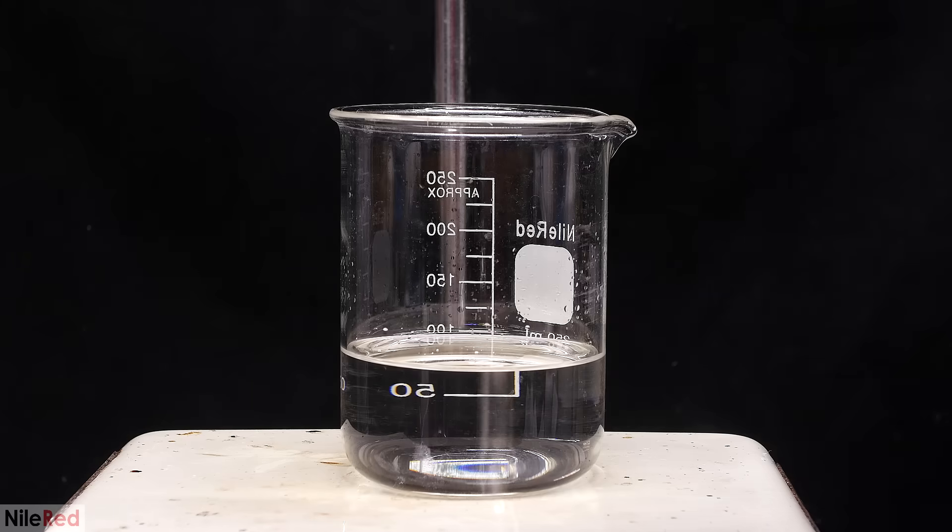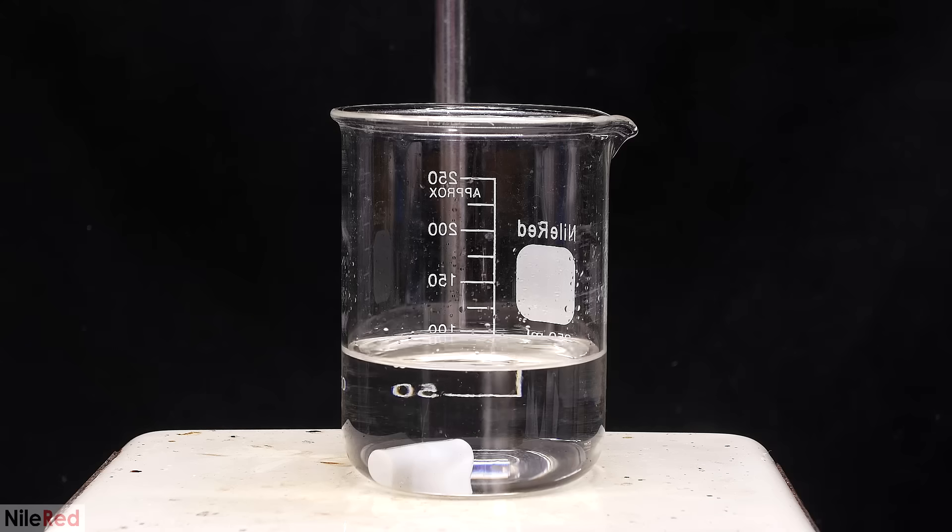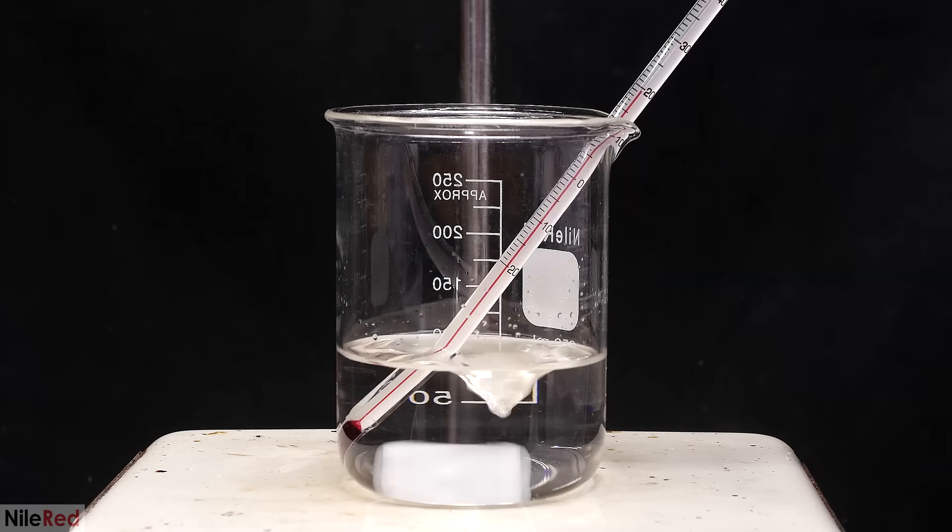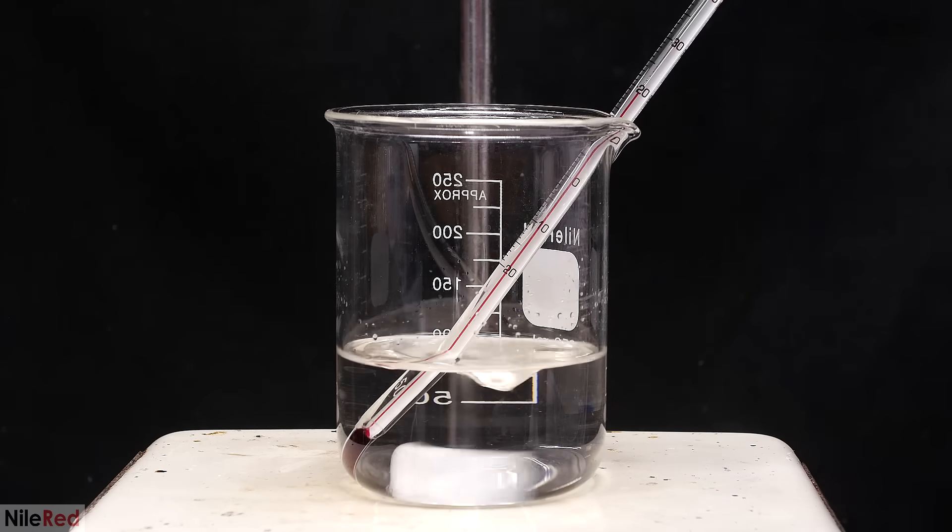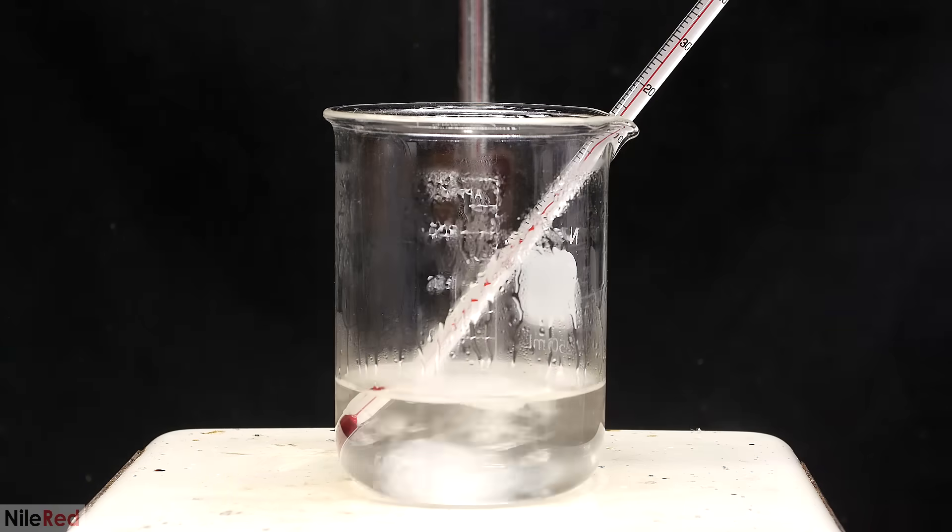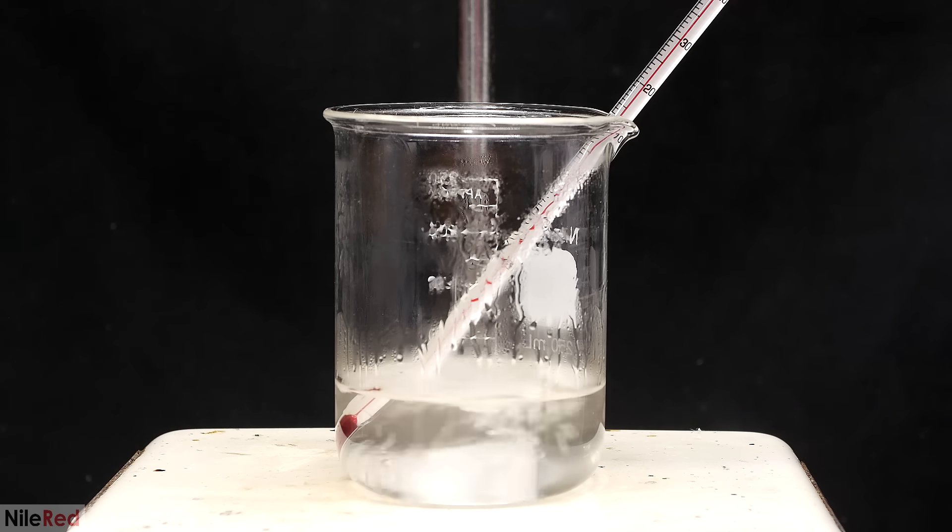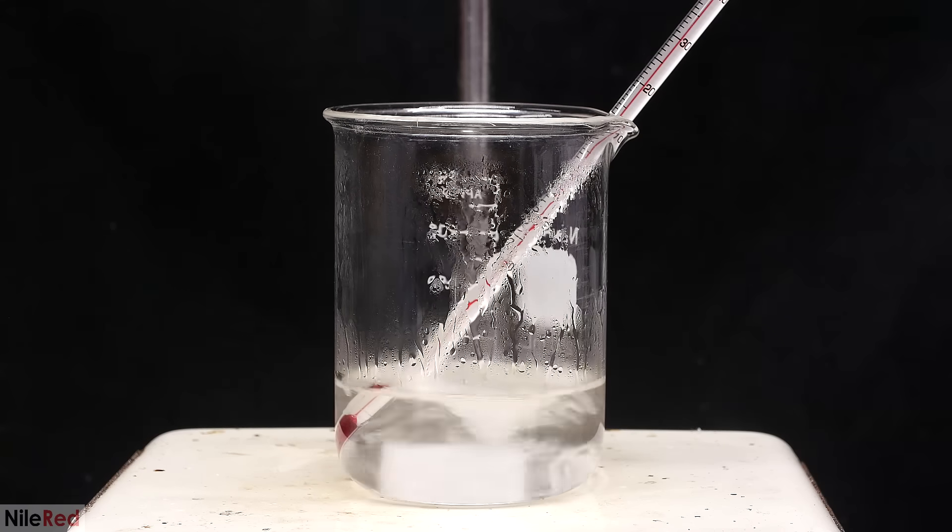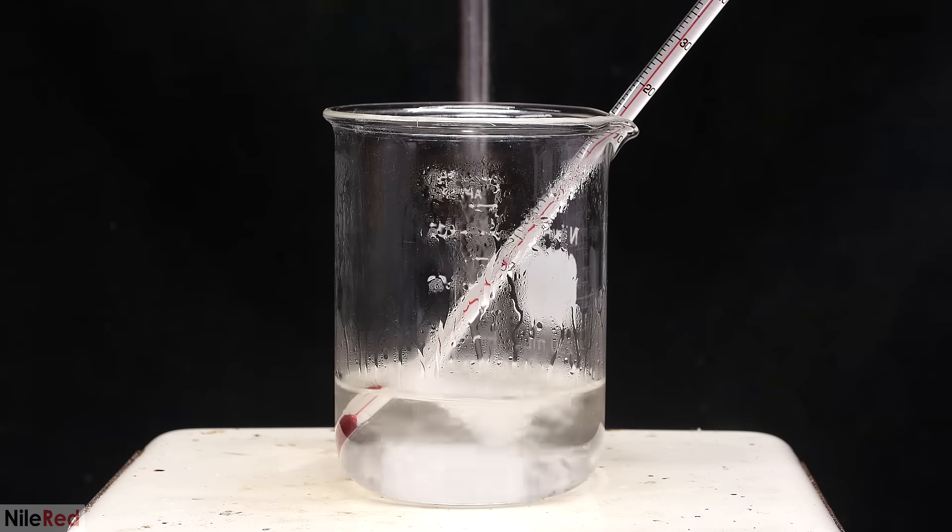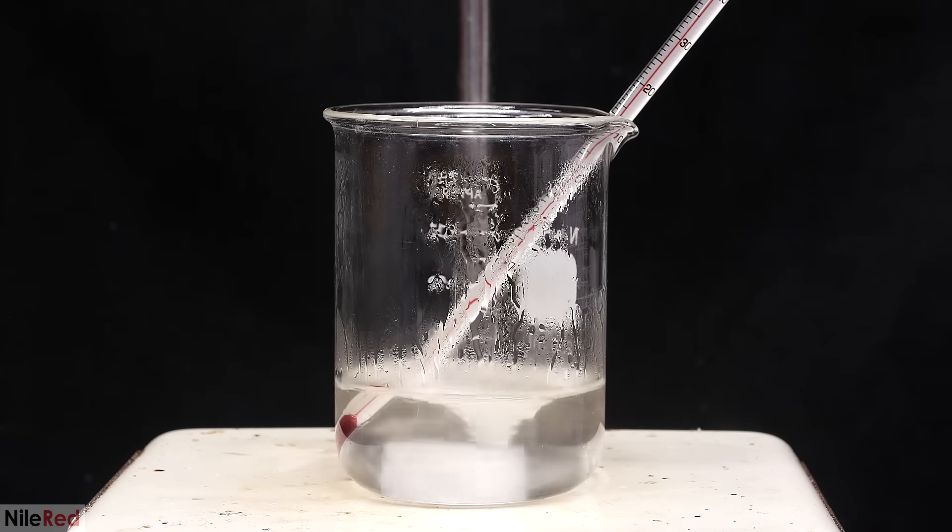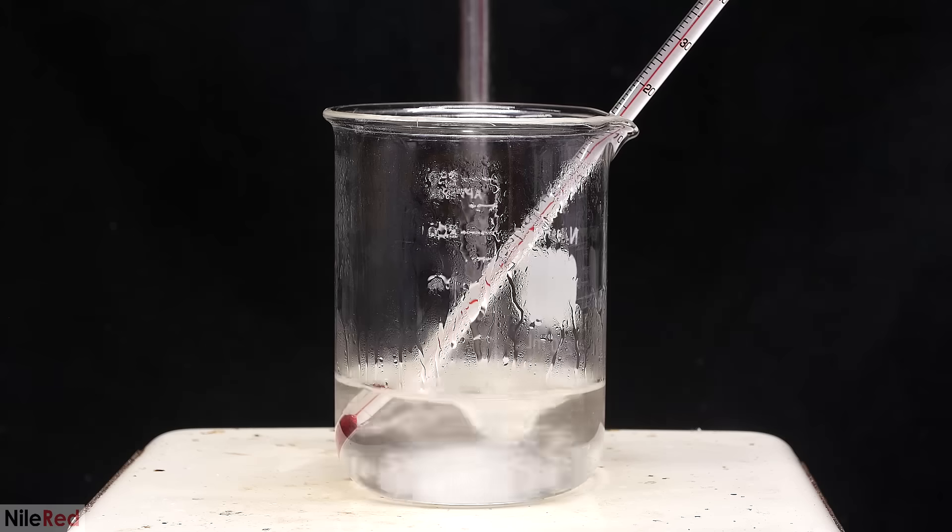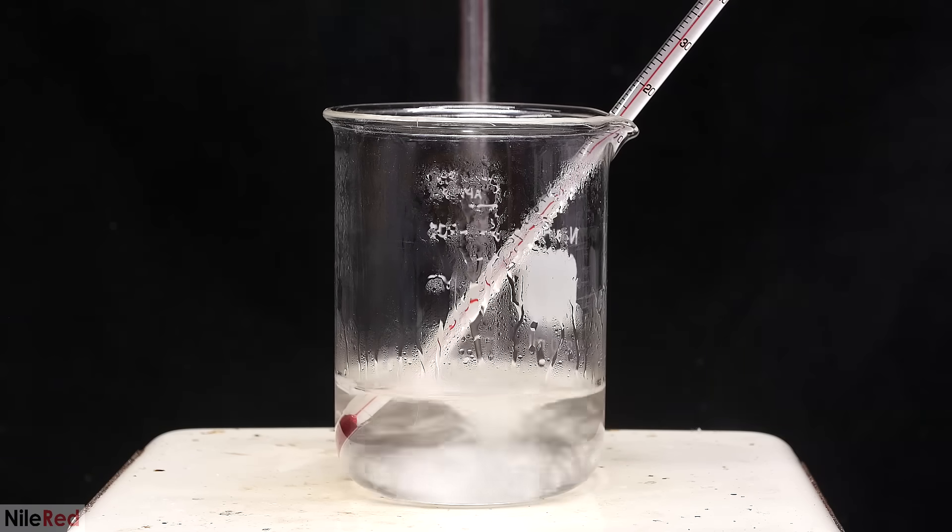Now we need to isolate the chlorobutanol, and to do this, I'm going to boil off all of the acetone and any unreacted chloroform. To make sure that all of the solvent is gone, I'm going to heat it right up to the melting point of chlorobutanol, which is around 95°C. This is well above the boiling points of acetone and chloroform, which both boil around 60°C.